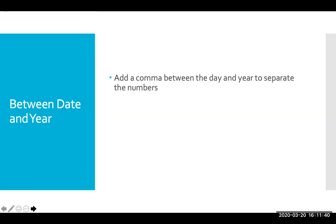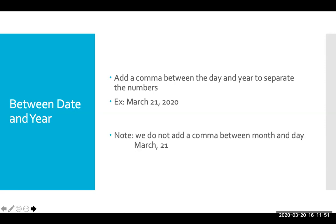Another time we use commas is between the date and year when we're writing out a full date — you want to do it to separate the numbers. So if I say 'March 21st, 2020,' I need a comma between those numbers. If I just say 'March 21st,' I do not need a comma — that's between month and day, and the comma rule is between the day and year. So 'March 21st, 2020' — comma needed. 'March 21st' alone — no comma, only if you put the year, and only in between the numbers.